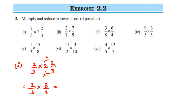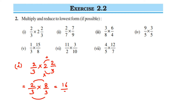Now if possible we have to cancel, but we cannot cancel numbers that are both in the numerator — like 2 and 8 both go in the 2 table, but we cannot cancel because both are in the numerator. Similarly, the two 3s cannot be cancelled because both are in the denominator. When cancelling, the number has to be in a numerator and a denominator. So just multiply: 2 × 8 = 16 and 3 × 3 = 9, giving 16/9.